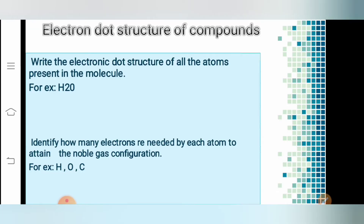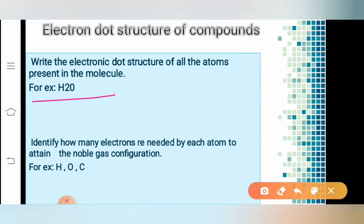Firstly, we have to start by writing the electronic configuration of all the atoms present in the molecule. For example, we have a molecule of water here. This molecule contains atoms of hydrogen as well as atoms of oxygen.